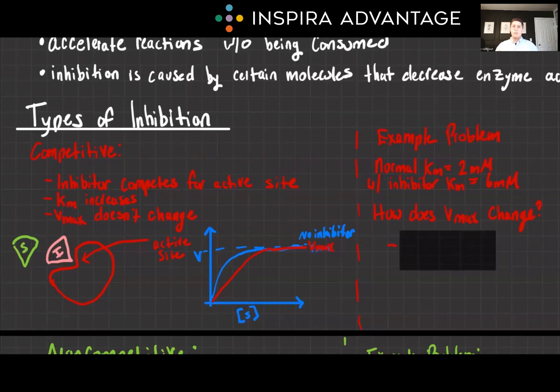Competitive inhibition occurs when an inhibitor molecule competes with the substrate for the enzyme's active site. It increases the KM, the substrate concentration at which the reaction rate is half of VMAX, but it does not affect the VMAX at all. VMAX stays exactly the same. This is crucial for you to understand.